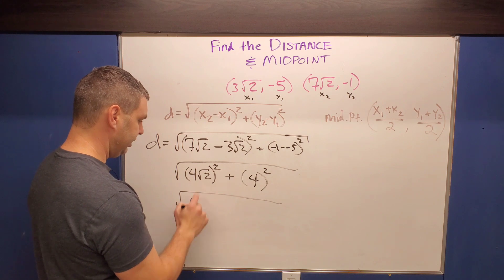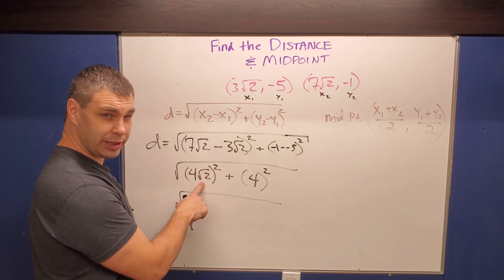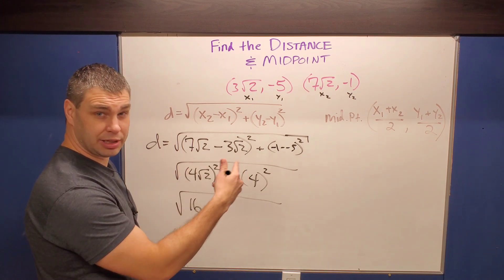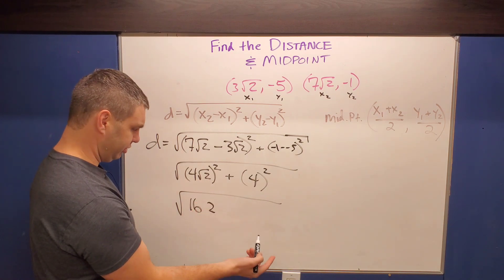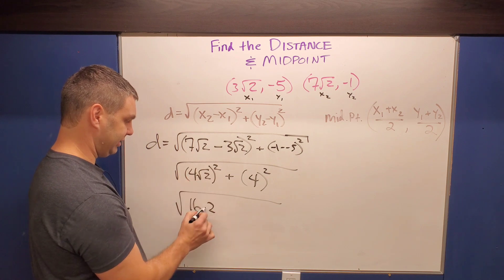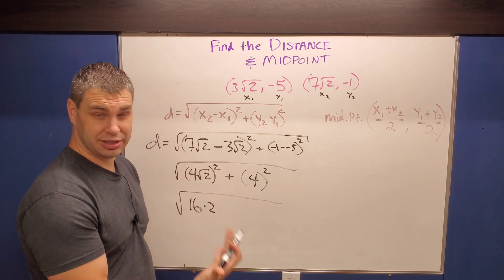Four squared is 16, but what's the square root of two squared? Well, the square root and the square cancel, leaving me with just a two. But I can't just say 16, two, it's being multiplied, right? So it's 16 times two, is kind of how you might think about that.